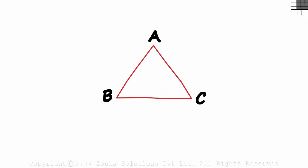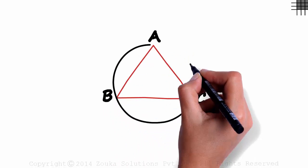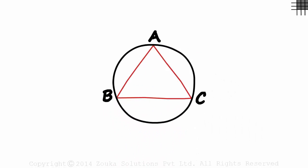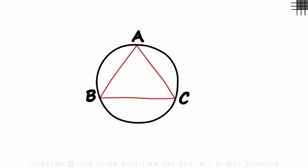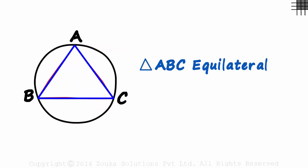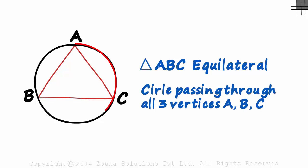A very common type of problem we see in exams is having an equilateral triangle enclosed within a circle. Here we have triangle ABC enclosed within this circle. Triangle ABC is equilateral and the circle passes through all the vertices of this triangle.